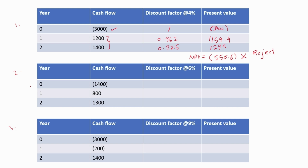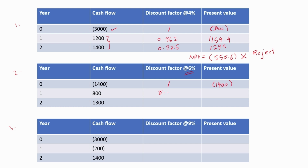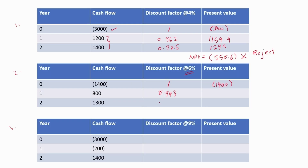Question 2: Year 0 is negative $1,400 (discount factor 1). The discount rate is 6%. From the present value table at 6%: Year 1 discount factor is 0.943, Year 2 discount factor is 0.890. After multiplying and summing, the NPV for this project is positive $511.4. We accept this project because it has a positive NPV, which means it will increase shareholder wealth.